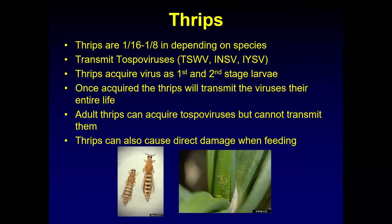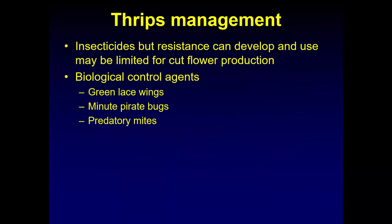Thrips can also cause damage directly by feeding, especially if they feed on flower buds that have not opened yet or on leaves that are just emerging. Most commonly thrips are managed by insecticides. If you apply them very early in the season you could get good control, but resistance can develop very quickly. Thrips reproduce asexually, so all offspring have the same genetics as the mother. If the mother is resistant, all offspring will be too. A thrips can lay 300 eggs over its lifetime, so you can see how quickly you can build a huge population of insecticide-resistant thrips.